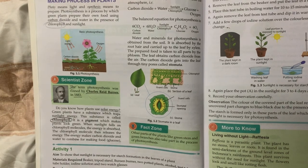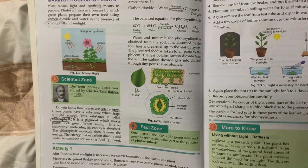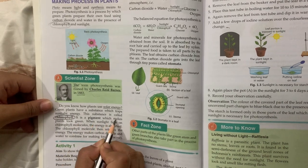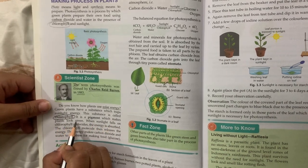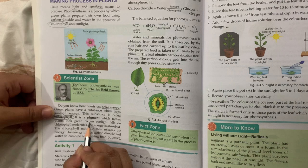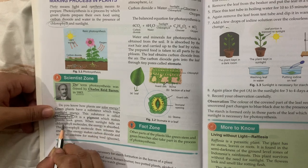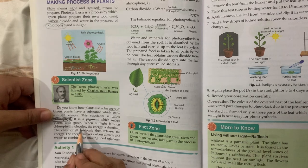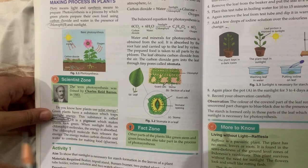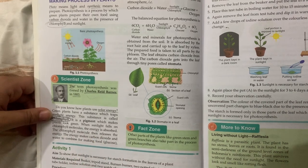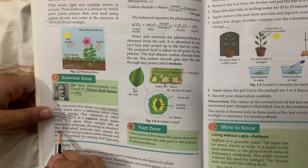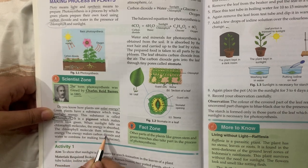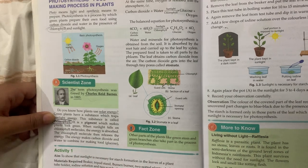Chlorophyll is a pigment that makes plants look green. When sunlight falls on chlorophyll, the energy is absorbed. The chlorophyll molecule then releases the energy. This energy makes carbon dioxide and water combine to make food.